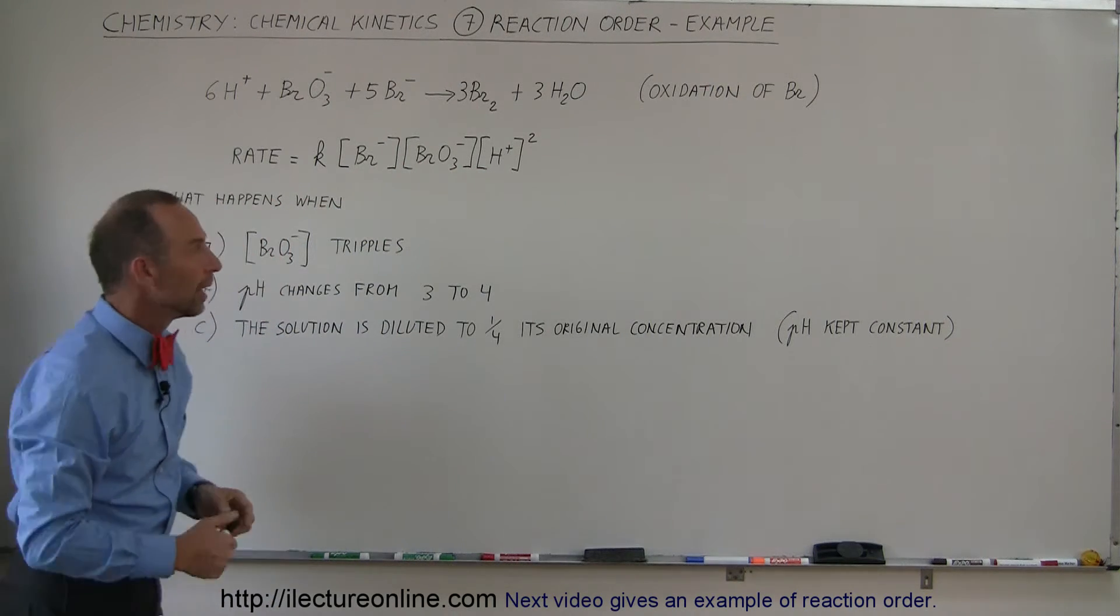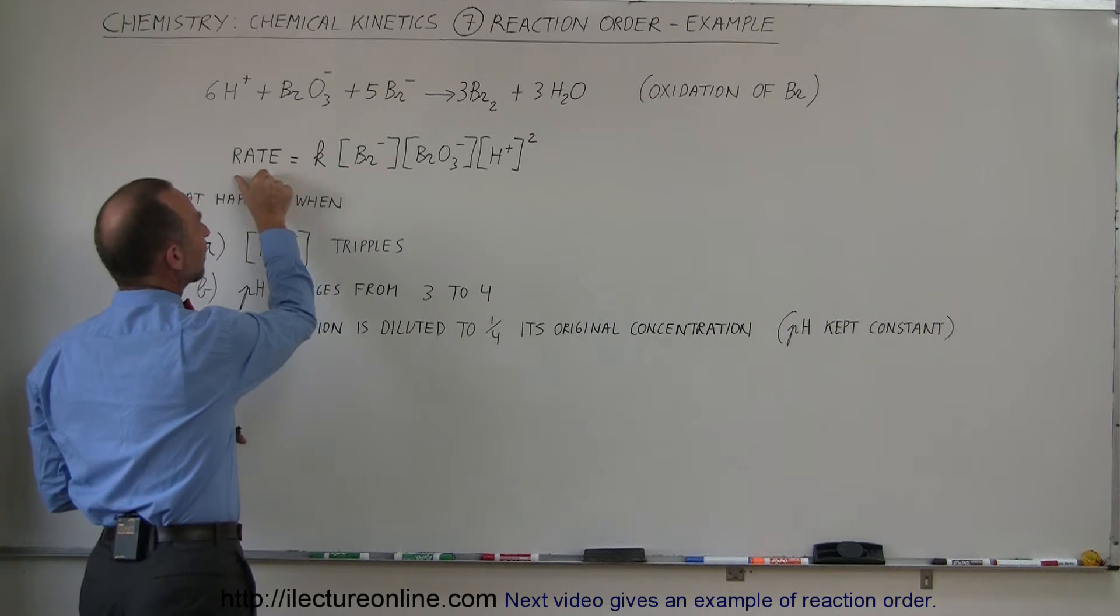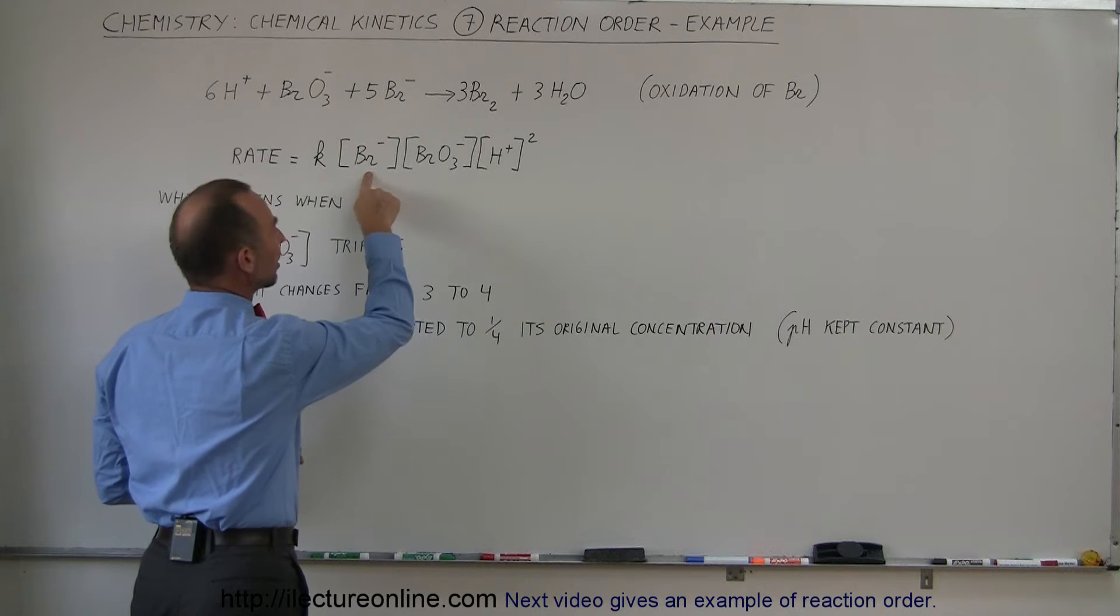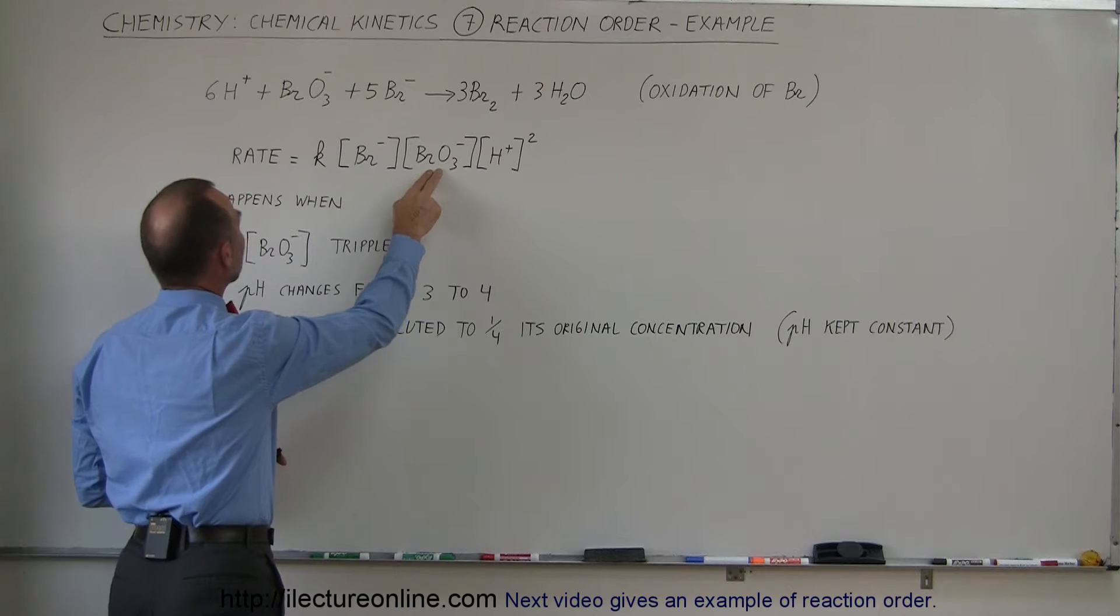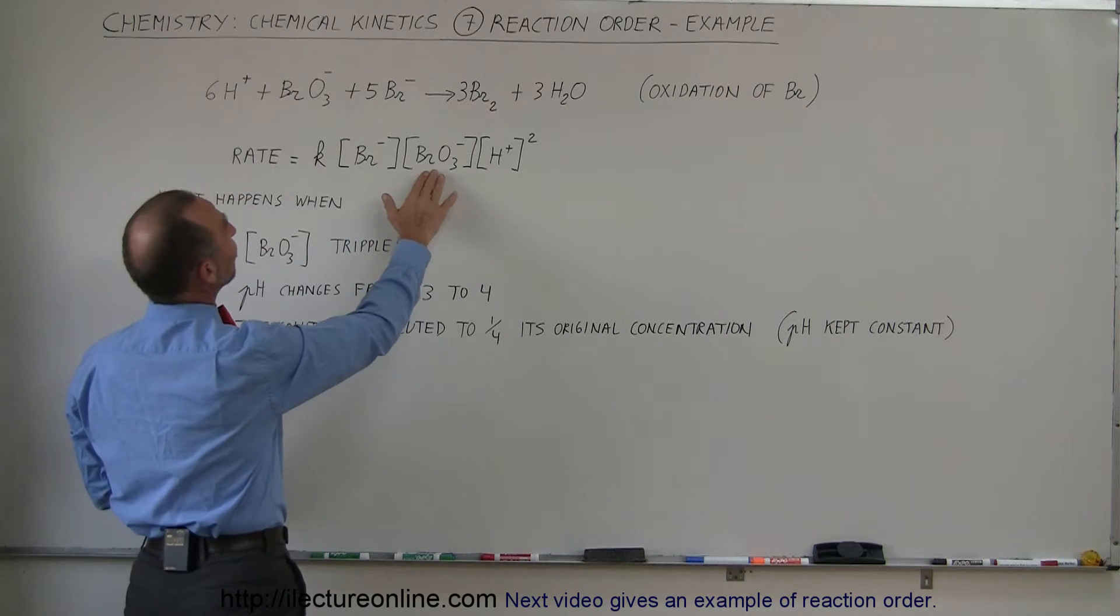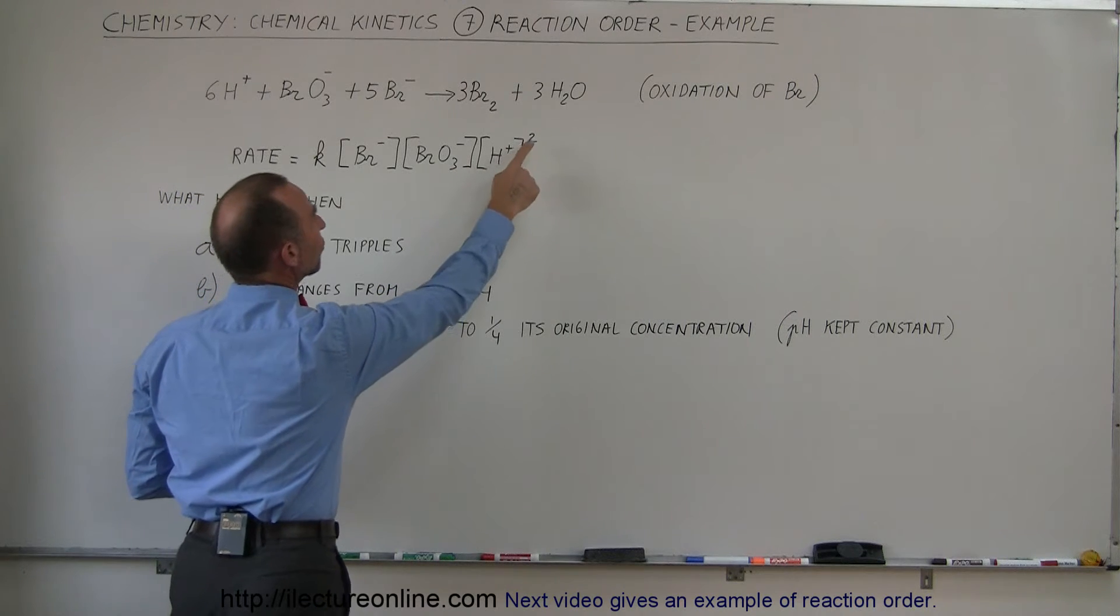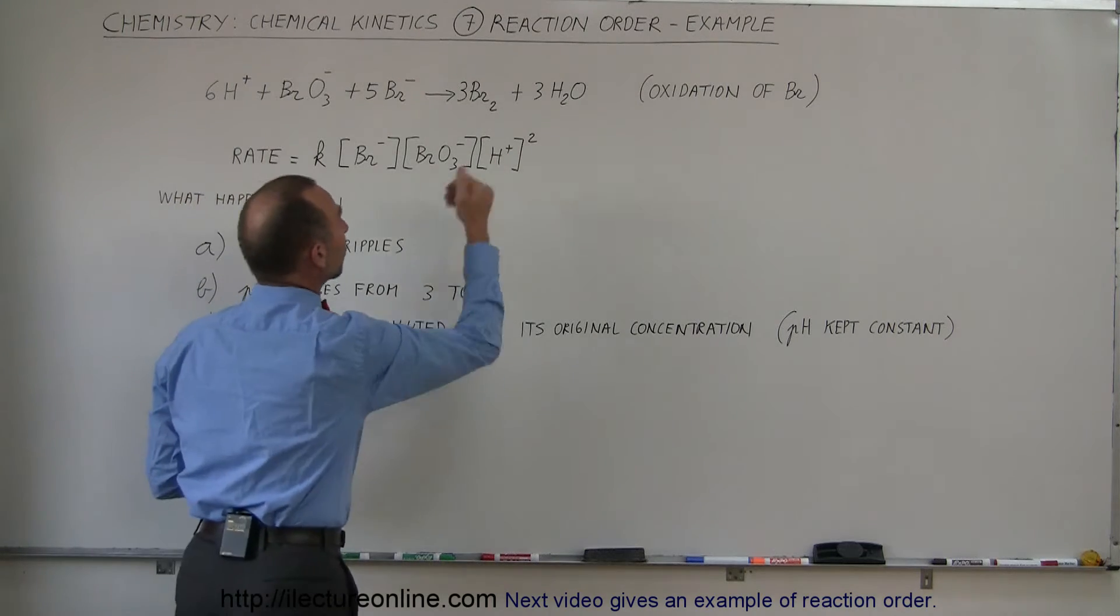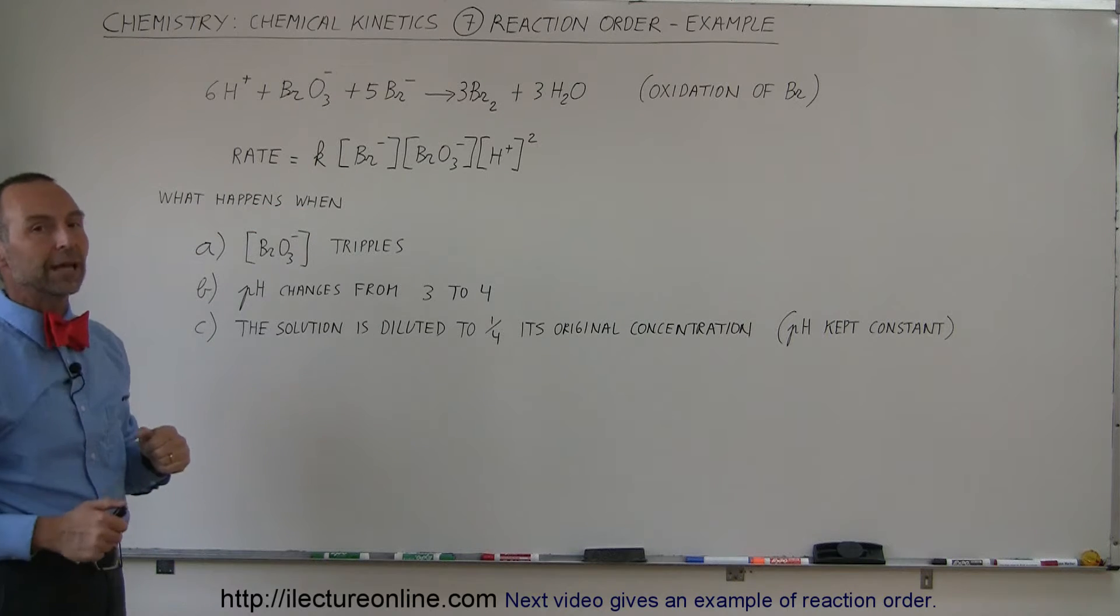But what's important is that the relationship between the rate and the concentration of each of the ions - it's linearly related to the bromine ion, it's linearly related to the bromate ion, and it's related to the hydrogen ion concentration squared. So if you double the hydrogen concentration, you quadruple the reaction.